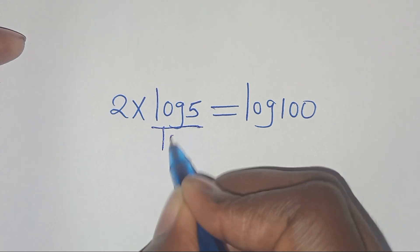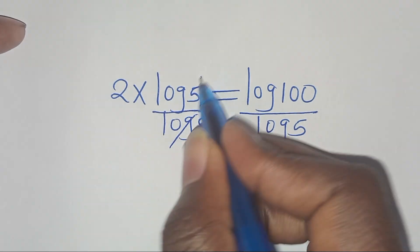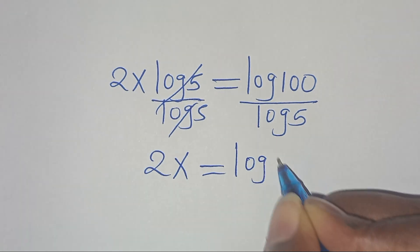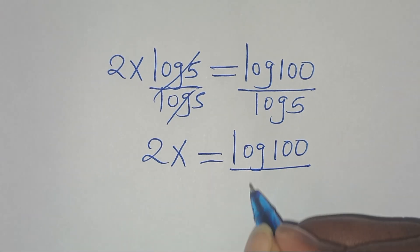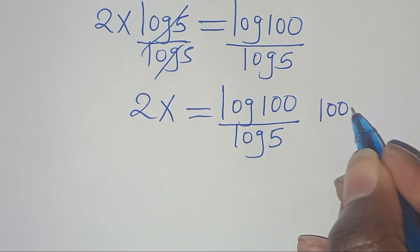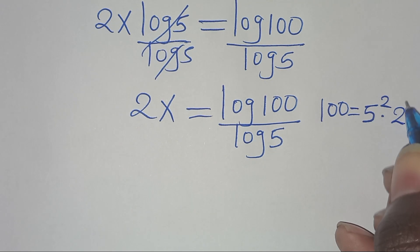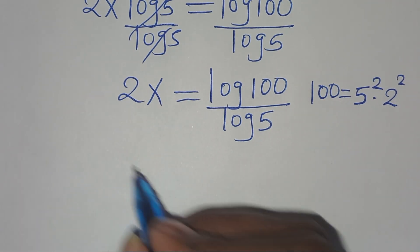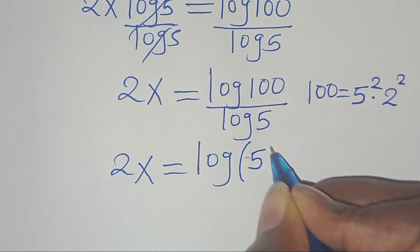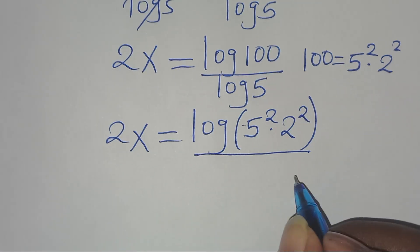Dividing both sides by log 5, log 5 cancels, giving us 2x equals log 100 divided by log 5. Now we can express 100 as 5 squared multiplied by 2 squared. So 2x equals log(5² × 2²) divided by log 5.